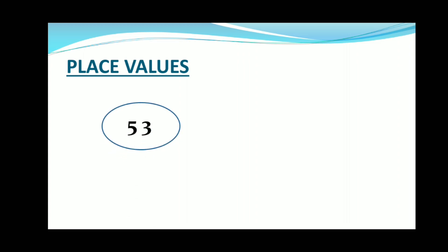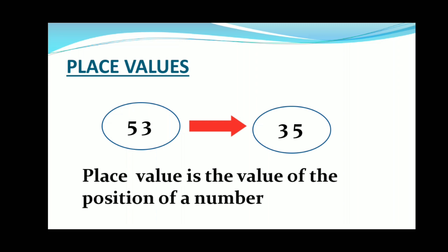The number shown is 53. If we change the position of the single digit, the number will change to 35. So here you can see 53 and 35 both have the same digits, but the place of digits is different. By just changing the position of one digit, the value of the number is changed. Place value is the value of the position of a number.